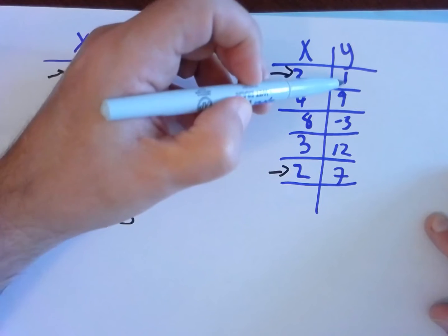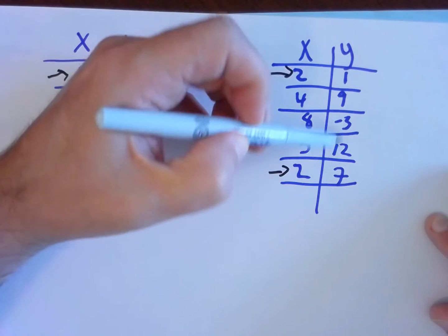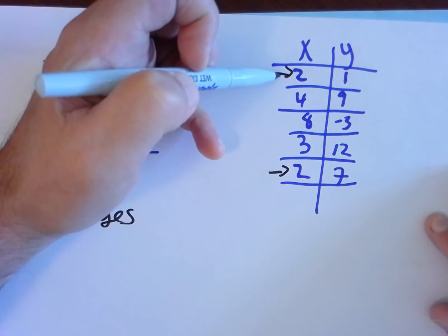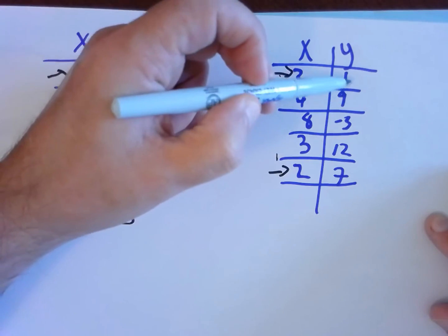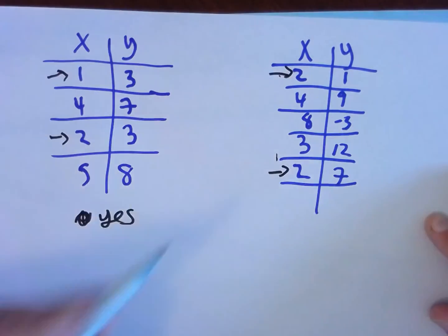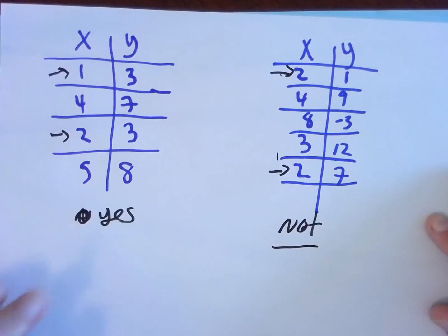Now, if these had been the same output, if these were both 1, we wouldn't have a problem. It's the fact that the input 2 has two different outputs. This is not a function.